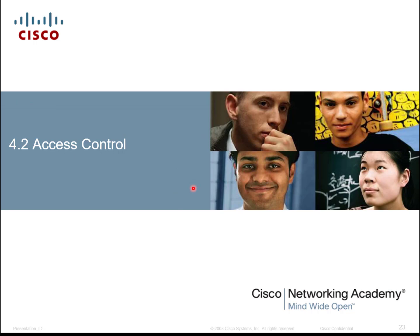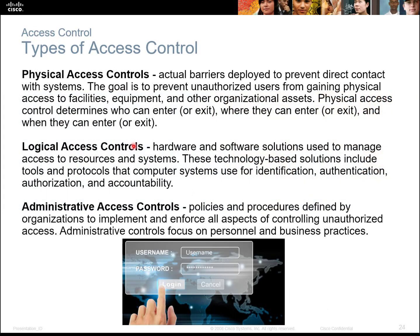Let's talk about access controls. You have different kinds: physical access controls, logical, and administrative. Physical is exactly what it sounds like. Have you ever noticed when you walk into organizations such as banks, there are always two doors coming in and two doors going out? That is so if anything happens, they can lock the person between the two doors for extra protection. Logical access controls involve hardware and software — using protocols and computer tools for identification, authentication, and accountability.